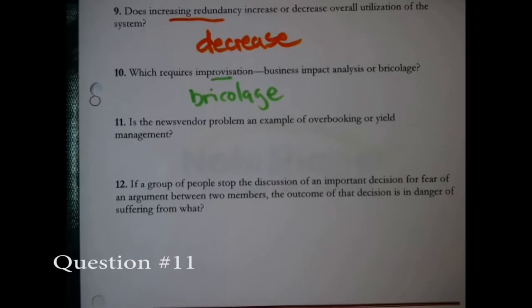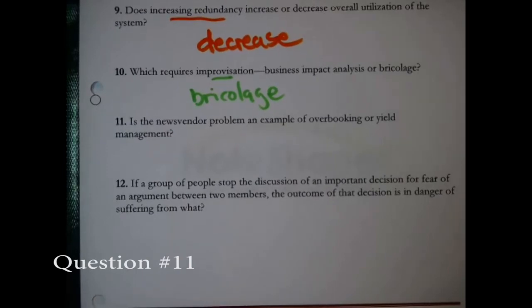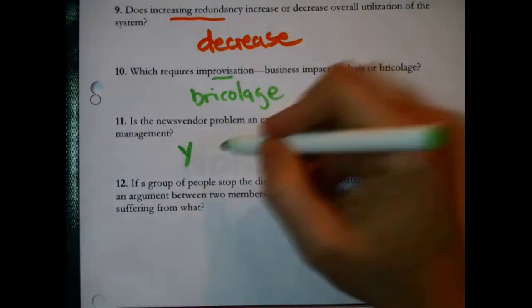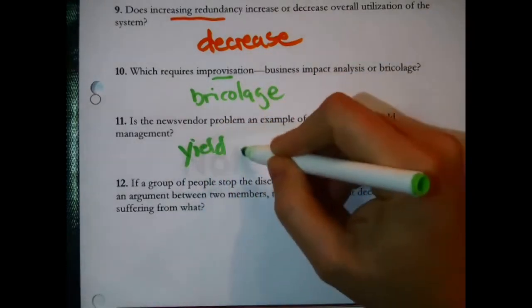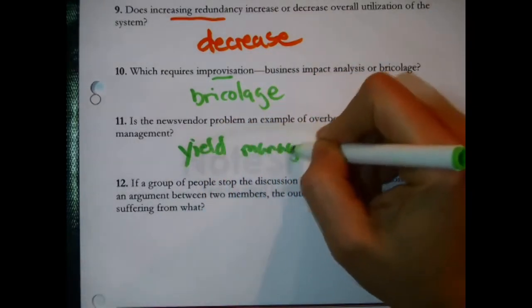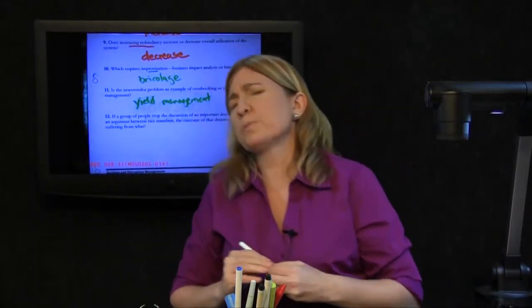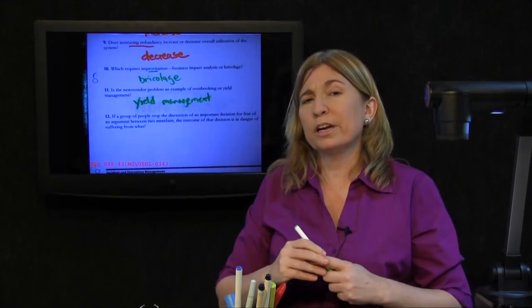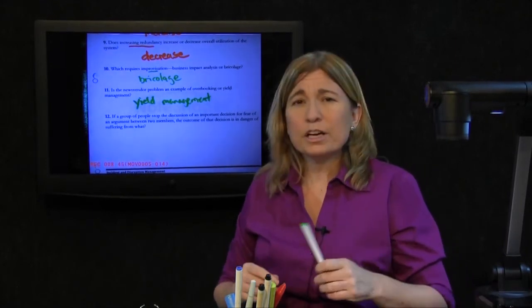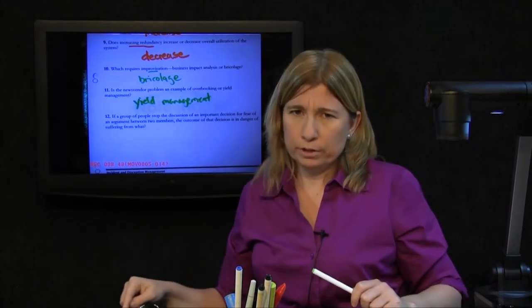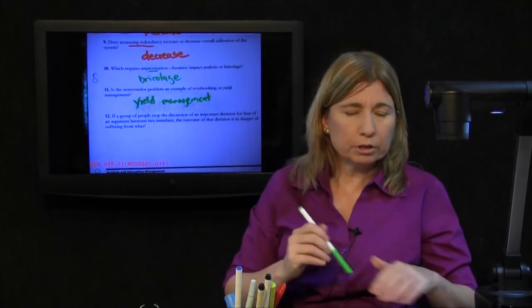Is the news vendor problem an example of overbooking or yield management? It is an example of yield management. How are you supposed to know it was that over overbooking? Because overbooking is also an example of yield management.